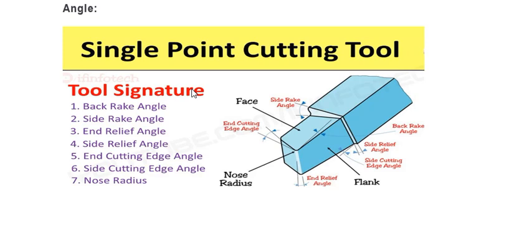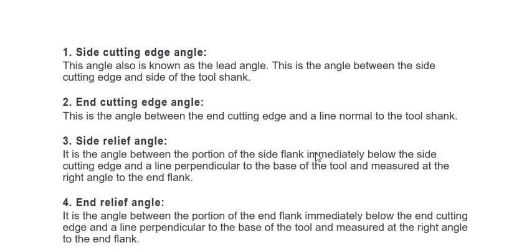Here you can observe in this figure — this is a 3D view of a single point cutting tool. You can observe all the angles written here. Total seven angles are shown with the help of this figure so that you can easily understand. We will go one by one for each and every angle, and here the definition of each and every angle is written.